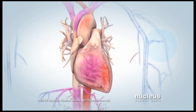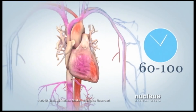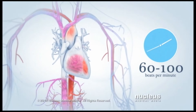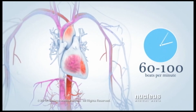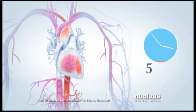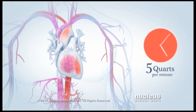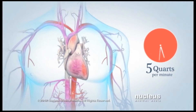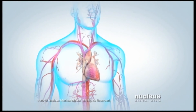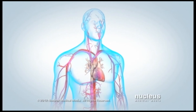Your heart beats an average of 60 to 100 beats per minute. In that one minute, your heart pumps about 5 quarts of blood through your arteries, delivering a steady stream of oxygen and nutrients all over your body.